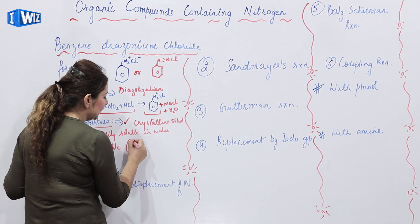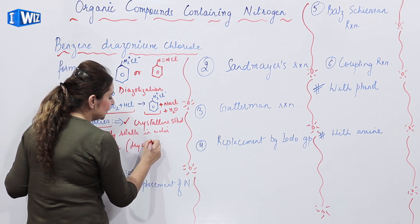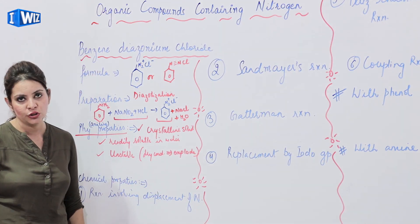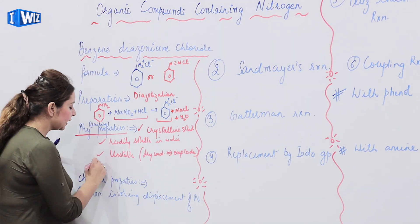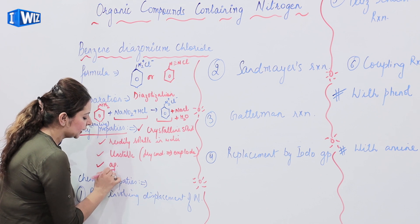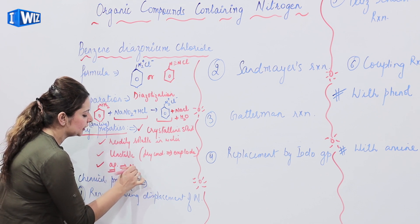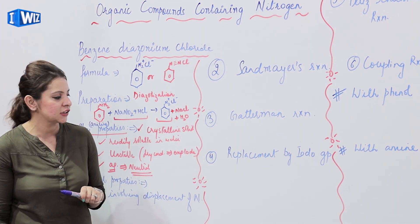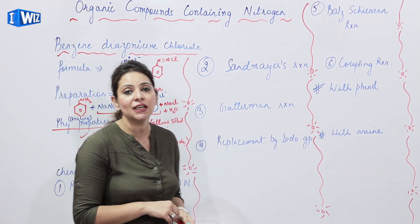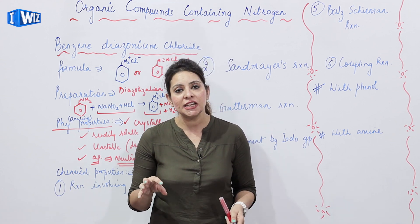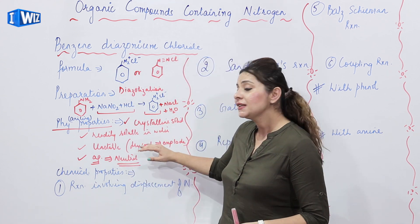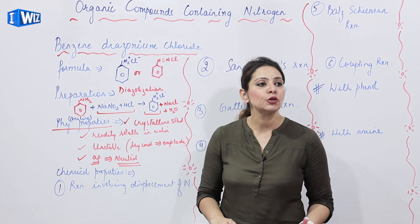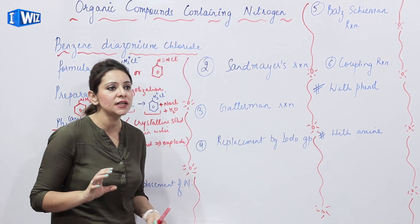In dry conditions, if we keep it in completely dry conditions, then this substance cannot exist, it explodes. And if we take its aqueous solution, what is the nature of aqueous solution? It acts neutral to litmus. It is neutral towards litmus. So now you understand the physical properties: it's a crystalline solid, readily soluble in water, unstable, explodes in dry conditions, and the aqueous solution is neutral towards litmus.